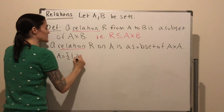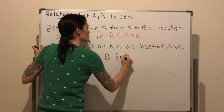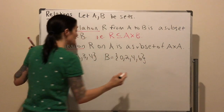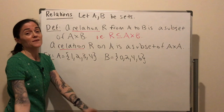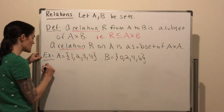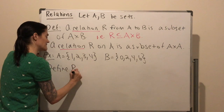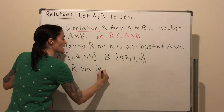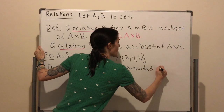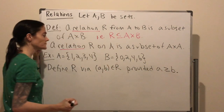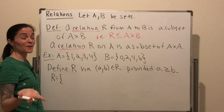We can take A to be {1, 2, 3, 4} and B to be {0, 2, 4, 6}. Now let me define a relation. By the definition, this is just a subset of the Cartesian product, and so I can specify a relation by telling you which ordered pairs are in it. I will say (a, b) is in my relation provided a is greater than or equal to b. Now let's write out the ordered pairs, and then I will get into some important notation.